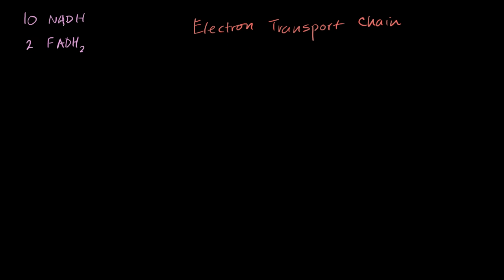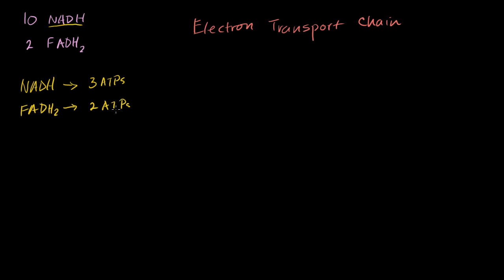The basic idea is that the NADHs — and FADH2 is a similar idea, although its electrons are at a slightly lower energy state, so they won't produce quite as many ATPs — each NADH is going to be indirectly responsible for the production of three ATPs. Each FADH2, in a very efficient cell, will be indirectly responsible for the production of two ATPs. The reason FADH2 produces fewer ATPs is because its electrons entering the electron transport chain are at a slightly lower energy level than those from NADH. So, how does this whole business work?